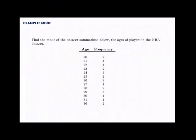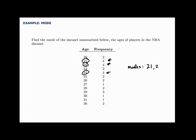Here we'll find the mode of a data set summarized in a frequency table. The mode is the most frequent data value. With data given as a frequency table, all you have to do is find the highest frequency. The highest frequency is 4, and it occurs for three different values: 21, 22, and 24. There are three values tied for most frequent, so there are actually three modes. The modes are 21, 22, and 24.